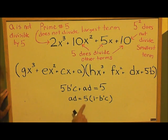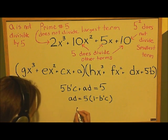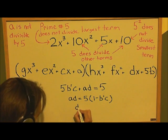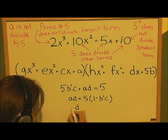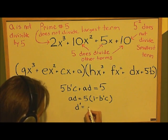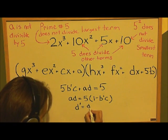Looking at this, we have a 5 on this side. So either a or d has to be divisible by 5. But we've already said that a is not divisible by 5, so that means d is divisible by 5. We'll define a new variable: d prime equals d divided by 5.